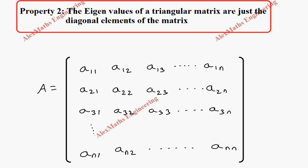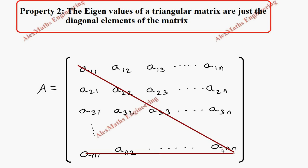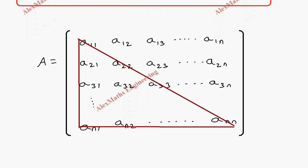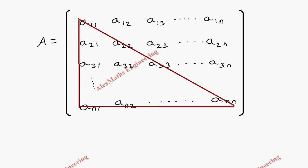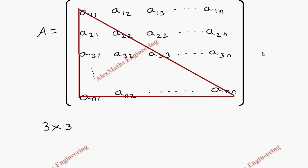Suppose if we take a triangular matrix, it will have elements in the triangular form — either upper triangle or lower triangle. We have the elements in one triangular part and the remaining elements will be 0. Let's consider a 3×3 square matrix and write the triangular matrix.